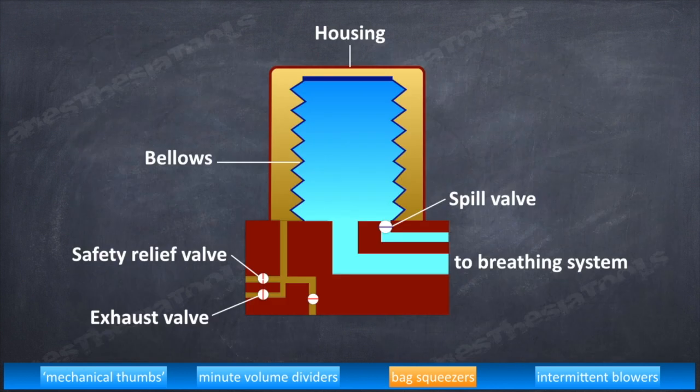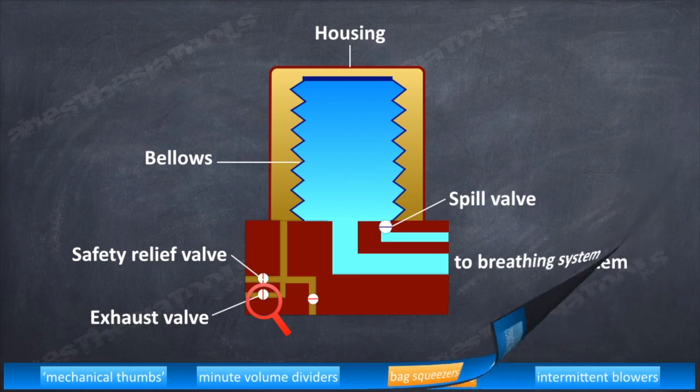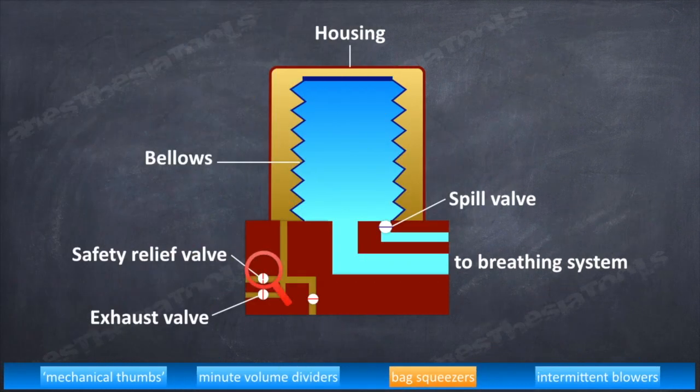Now into graphical representation of the functioning of ascending bellows ventilators. The bellows is contained within the clear housing. The driving gas from the ventilator does not ventilate the patient directly. The bellows is filled by fresh gas flow or patient gas when in use and attached to a breathing system. In the diagram, please identify the drive gas inlet, exhaust valve, and safety relief valve. You may also note the spill valve for gas within the bellows, which opens on excessive pressure within the bellows.